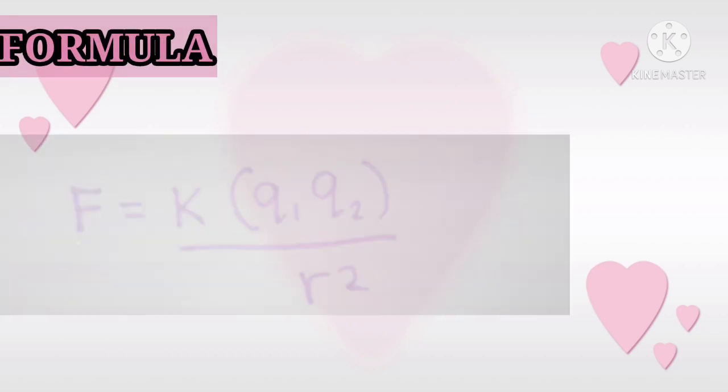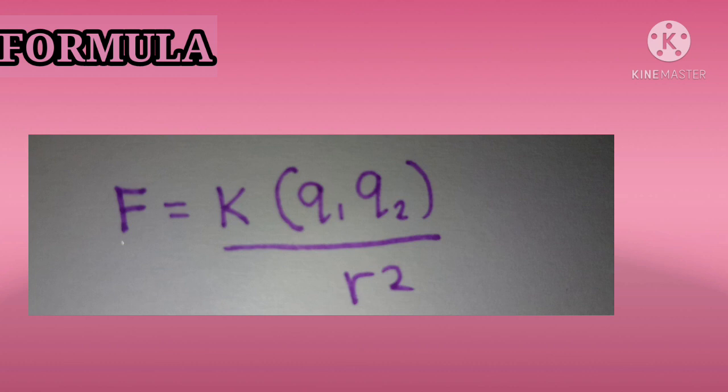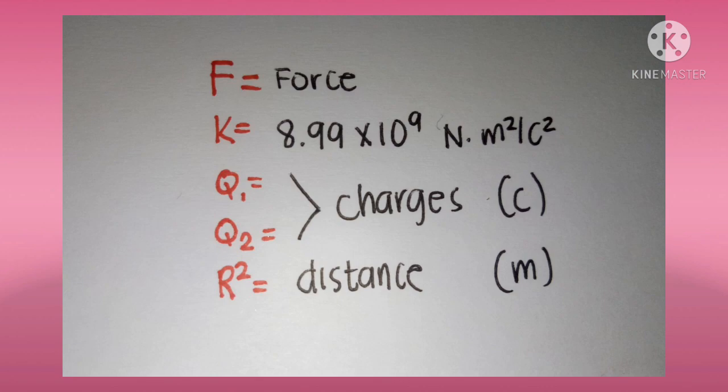So, this is the formula. F equals K times the quantity Q1 times Q2, all over R squared. F is for force, K is the Coulomb's Law constant, which is 8.99 times 10 raised to the 9th, in units of N times M squared all over C squared. Q1 and Q2 are the charges, and R squared is the distance in meters.